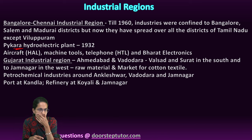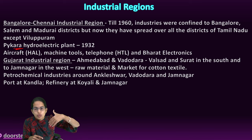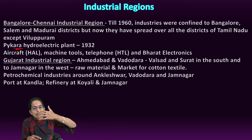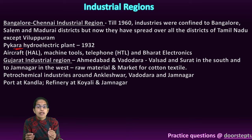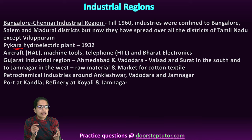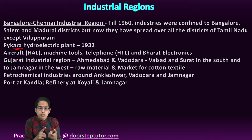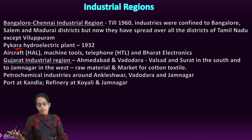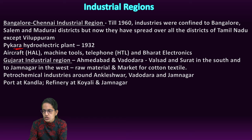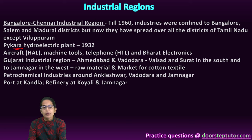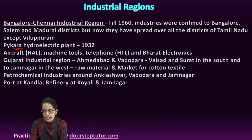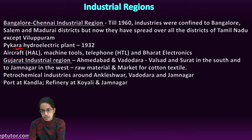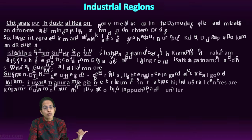The Gujarat industrial area spans from Ahmedabad and Vadodara in the north, to Valsad and Surat in the south, and Jamnagar in the west — a center for both raw material and market for cotton textile. Petroleum refining started at Jamnagar and Koyali. Petrochemical industries were established at Ankleshwar, Vadodara, and Jamnagar. Other industries included dairy products, food processing, pharmaceuticals, and dyes. The whole area of Ahmedabad, Vadodara, Surat, Rajkot, Surendranagar, Kheda, and Jamnagar prospered as the Gujarat industrial region, aided by proximity to ports.